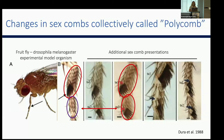Collectively, there were many genes that they went around and broke, and they found many genes that when broken gave this extra sex comb or extra leg segment. Collectively, a lot of those genes are now referred to as polycomb genes and polycomb biology — a set of genes that can have really profound effects while you just have a duplication of a leg.